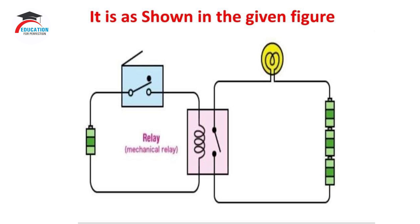As such, the bulb gets turned on in the secondary part of the relay circuit. And when the power supply gets disconnected from the end terminals of the coil at the primary part of the relay circuit, then the relay circuit gets demagnetized, thus putting off the bulb in the secondary part of the circuit.